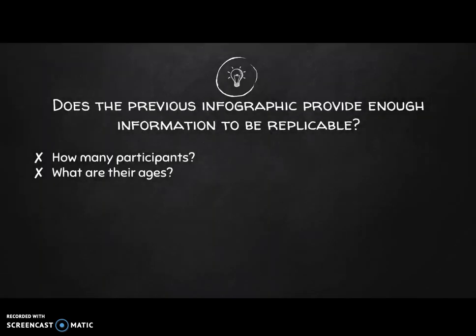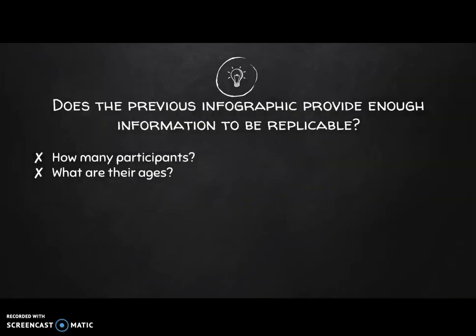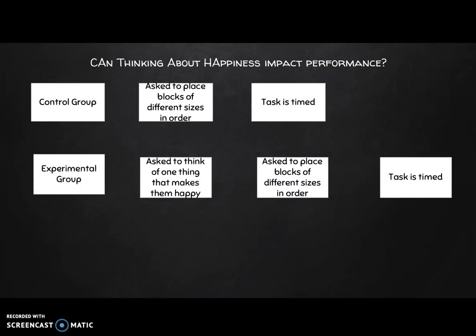But this raises some questions. Does the previous infographic provide enough information for it to be replicable? It's pretty flawed. How many participants, and what are their ages? If I tried to replicate this without knowing the age group, what if I use teenagers or people in their 20s or 30s? Does that impact the outcome? I'm being asked as the reader to make guesses. What I want to do when communicating about my research is provide as much detail as possible so that anyone reading or observing my work does not have to come to their own conclusions.